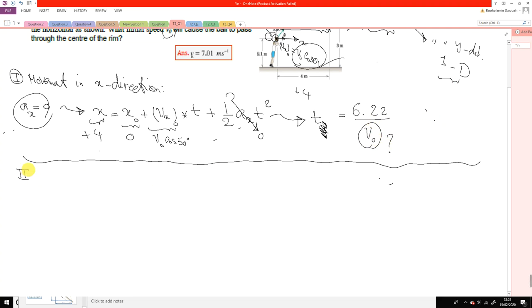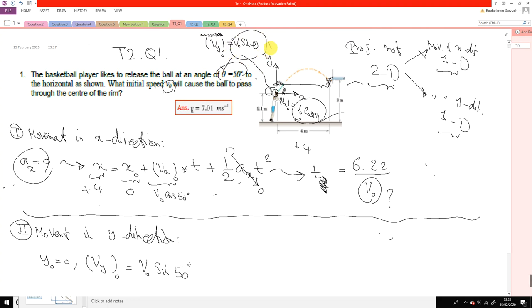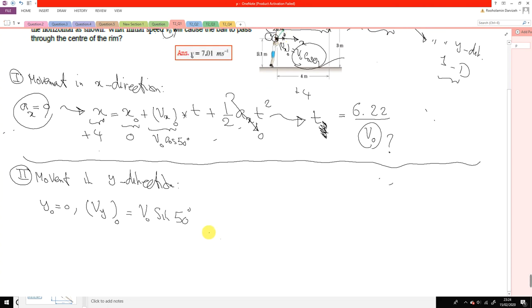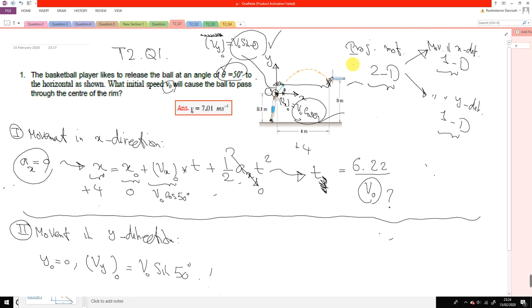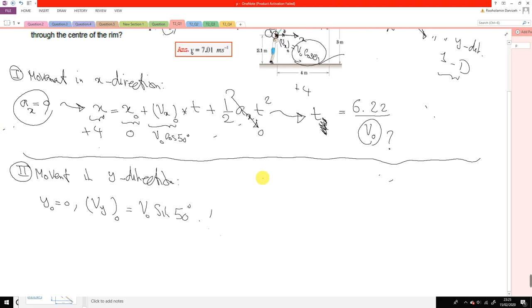Now we look at the second part which is movement in y direction. Initial position is zero. Initial velocity is V0 sine 50 degrees. Here we have gravity is downward, and we assume upward to be positive. Then the sign of the acceleration in y direction is minus, because it's in the opposite direction of the chosen sign convention for positive. Vertical component, Ay is minus g, minus 9.81.